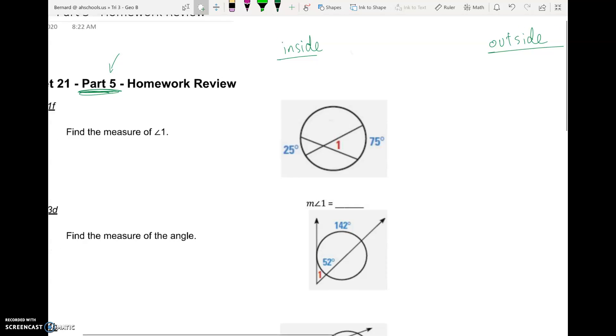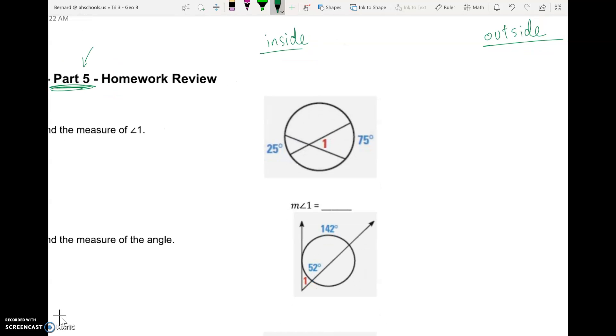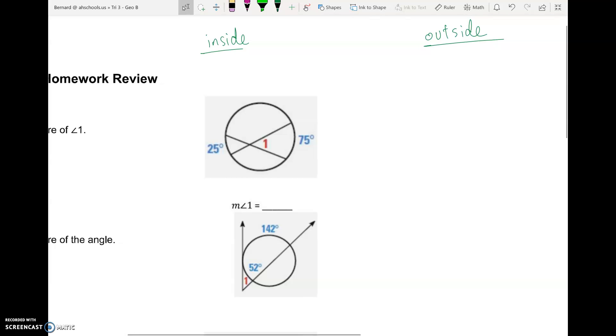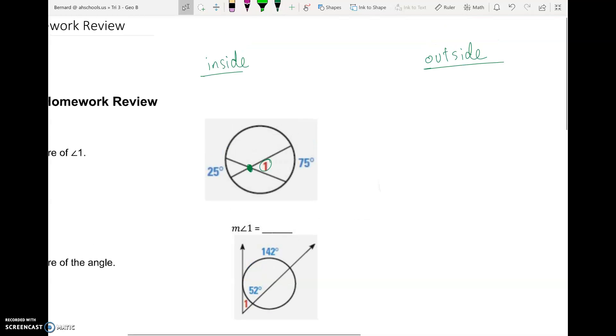Remember, when the angle is inside, and that's kind of like here in the first problem we got, so that's number 1F, what I mean by inside is these two lines intersect inside my circle. And so we're looking at like angle 1 here. And when it's inside, in general what we're going to say is the angle measure is going to equal the two arcs added together. So arc plus arc divided by 2.